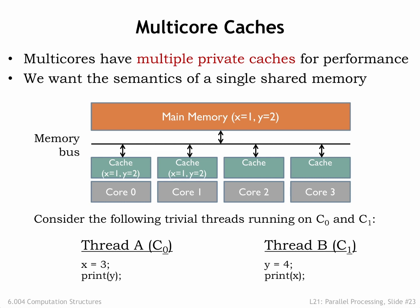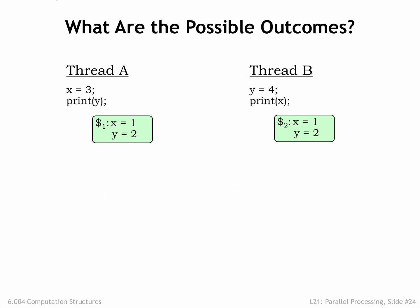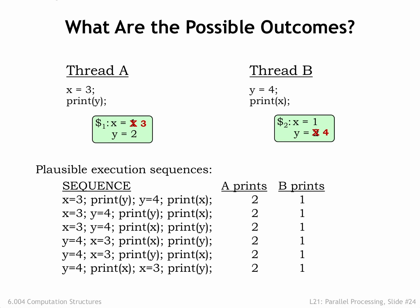Those values are held in main memory as well as being cached by each core. What happens when the threads are executed? Each thread executes independently, updating its cache during stores to X and Y. For any possible execution order, either concurrent or sequential, the result is the same: thread A prints 2, thread B prints 1.